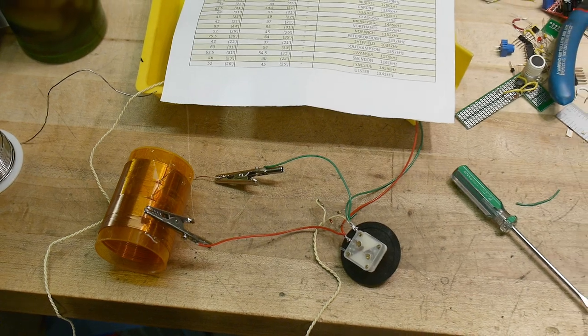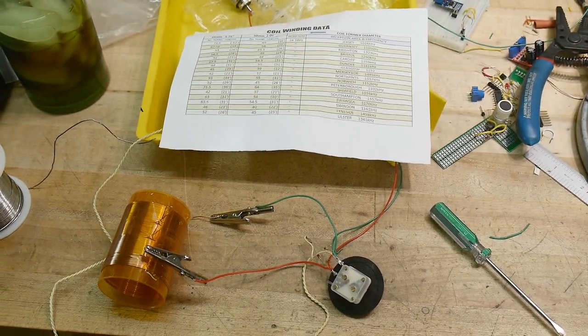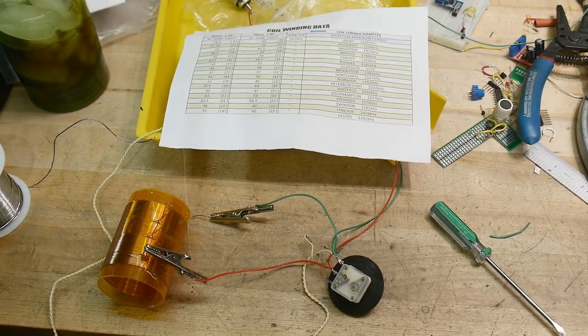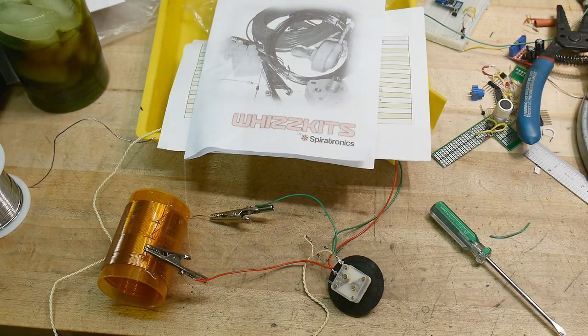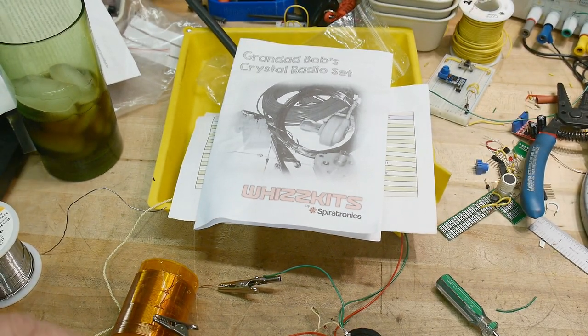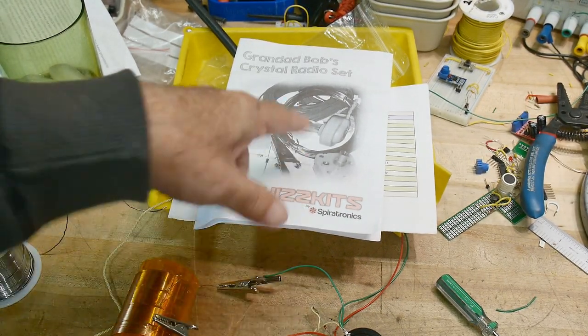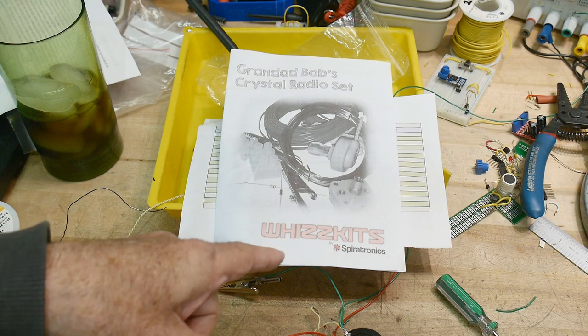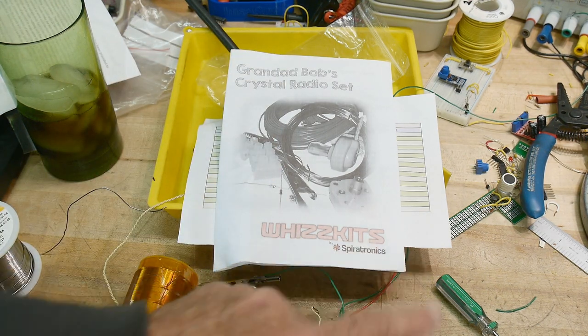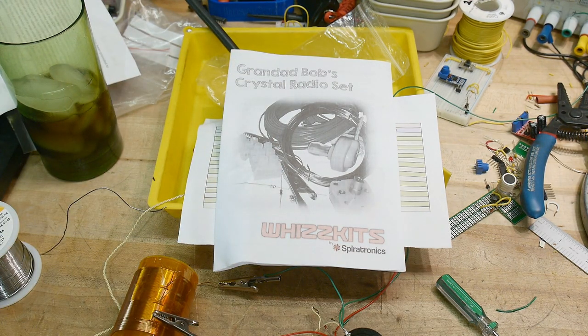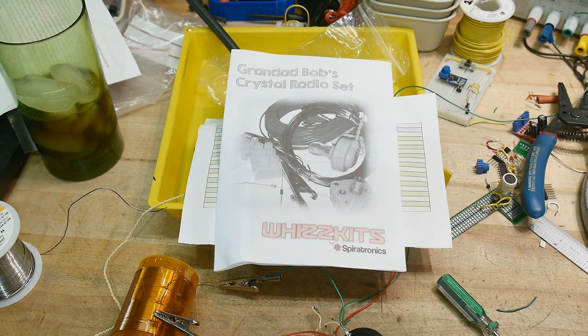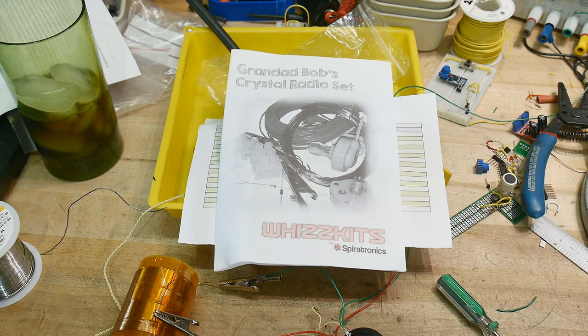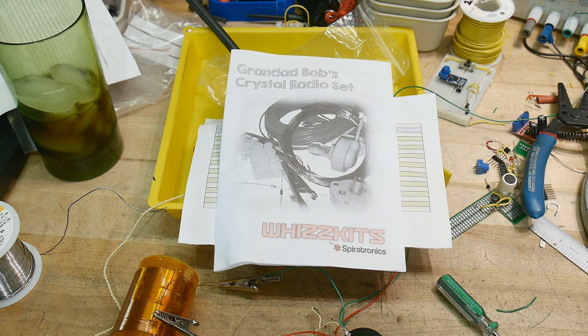Yeah, there you go. So if you want to build a crystal radio, this one is from Whiz Kits by Gyrotronics. I don't know if I bought this on eBay or Amazon or something, but if you search for it you'll find it. Not a sponsor. Whiz Kits. That's a good one.